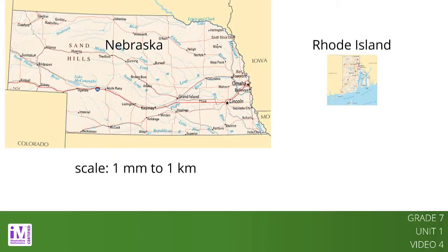The map of Nebraska has a scale of 1 millimeter to 1 kilometer. This means that each millimeter on the map represents an actual distance of 1 kilometer in Nebraska. There are 1,000 millimeters in 1 meter and there are 1,000 meters in 1 kilometer. By multiplying these numbers, we see that there are 1,000,000 millimeters in 1 kilometer. So without units, the scale of this map is 1 to 1,000,000.